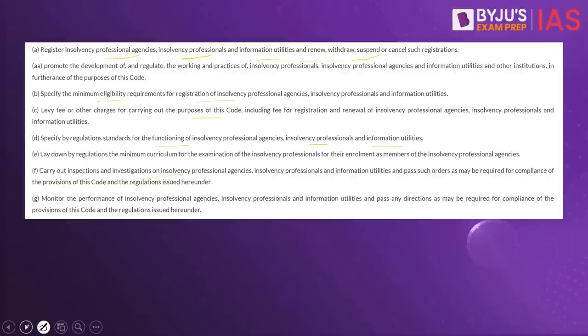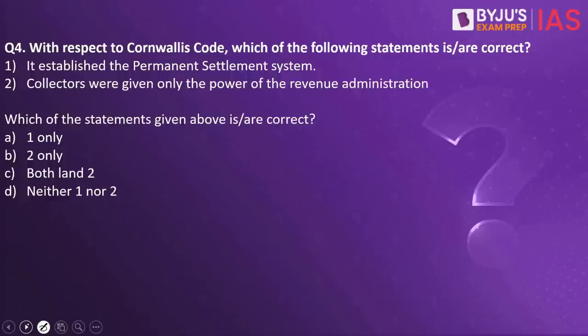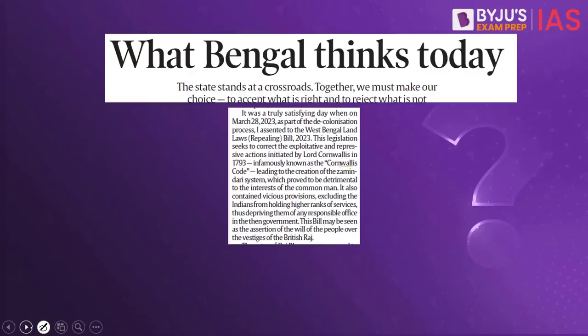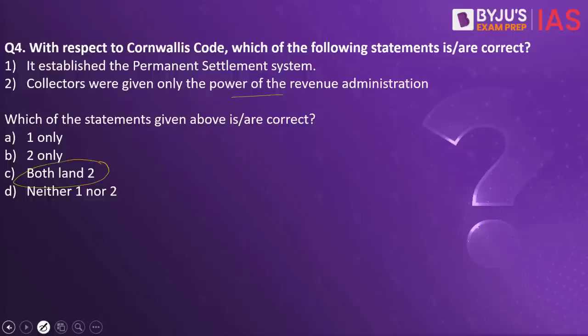Now let's look into the next practice question. With respect to Cornwallis Code, which of the following statements is/are correct? It established the permanent settlement system. Collectors were given only the power of revenue administration. The answer is both one and two. This practice question is taken because an article on the Indian Express makes a reference to Cornwallis Code.